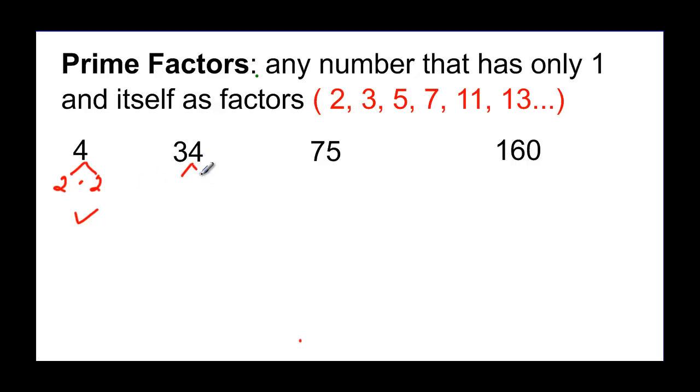Alright, let's try 34. Now this is an even number, so I'm going to just start with 2. And then 2 goes into 3 once, so that's 1 left over. And then 2 goes into 14 seven times, and 17 happens to be a prime number. 17 happens to be a prime number, so this one's done.